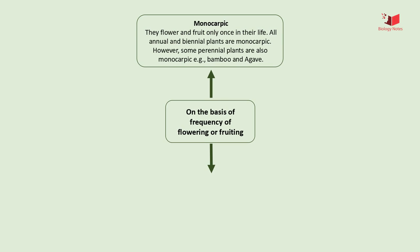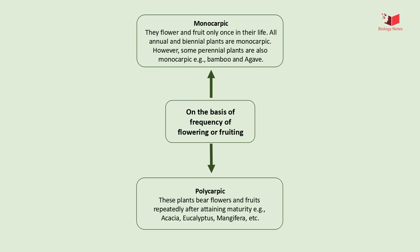Polycarpic plants strive towards continued reproduction and may focus less on their growth. Examples of polycarpic plants are acacia, eucalyptus, Mangifera, etc.